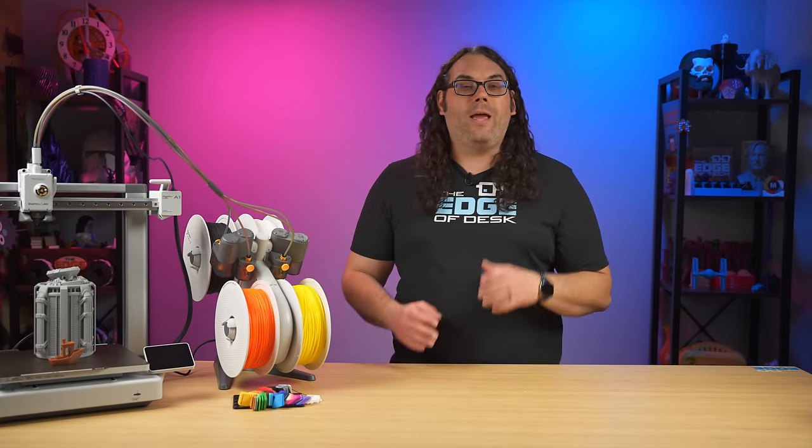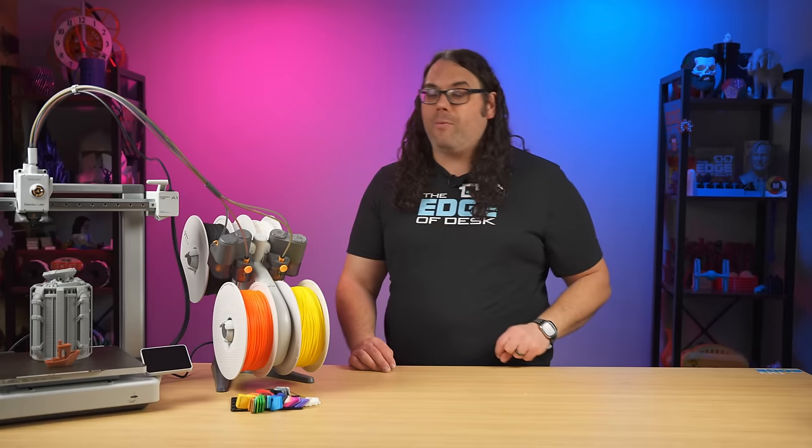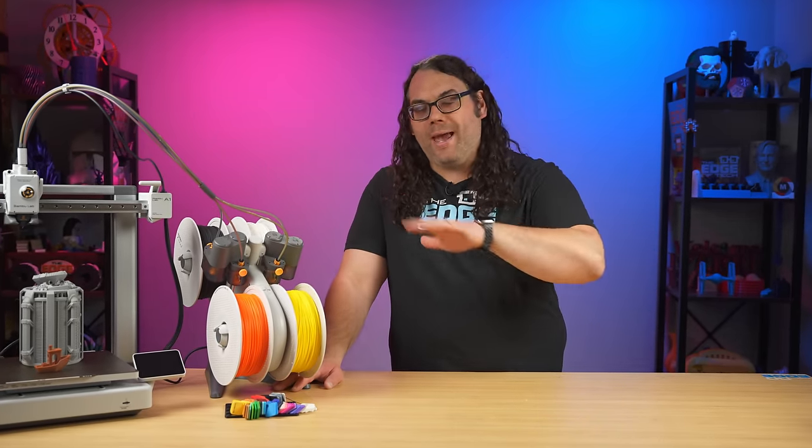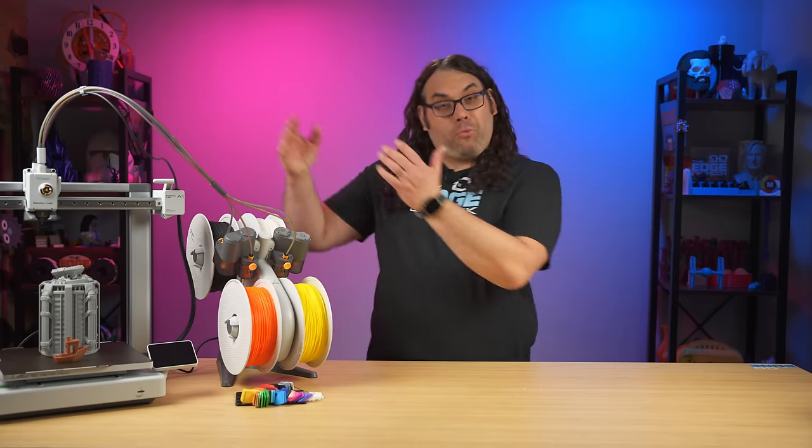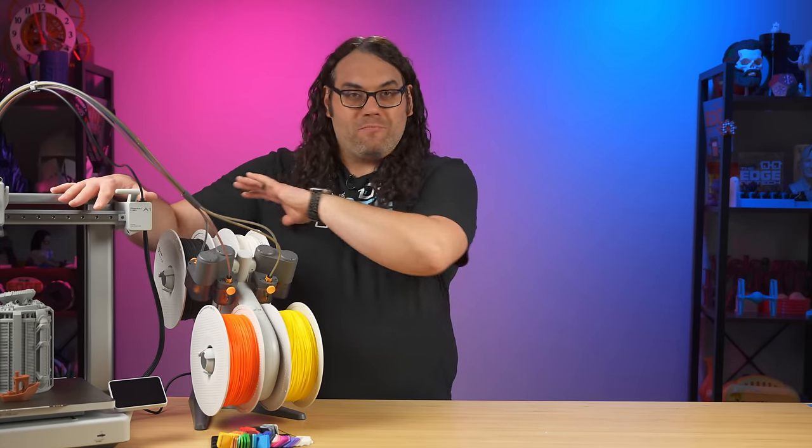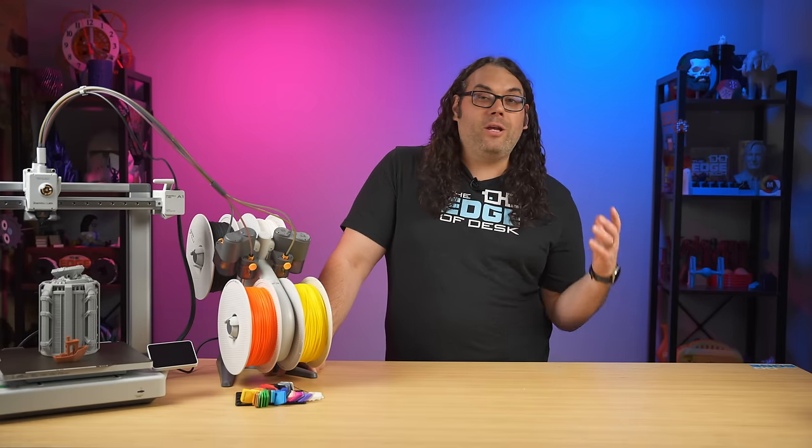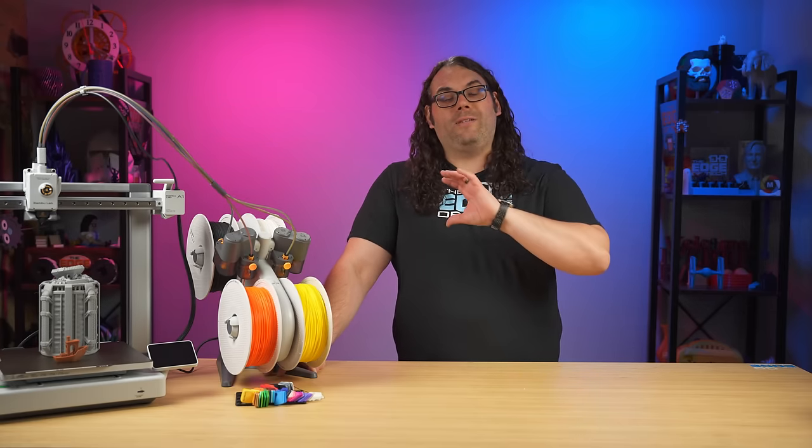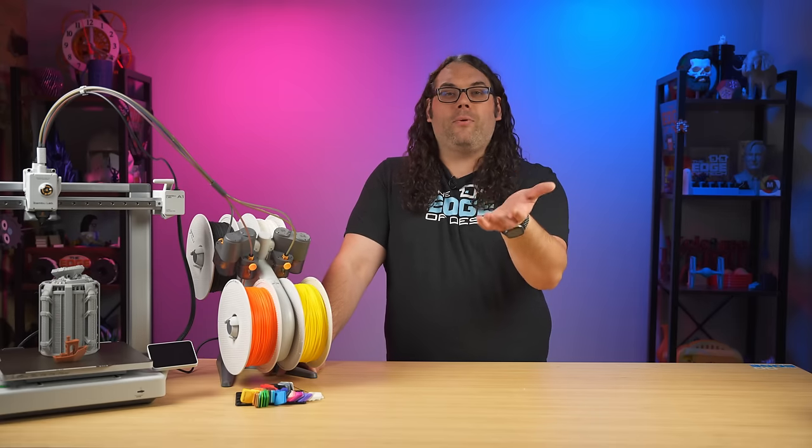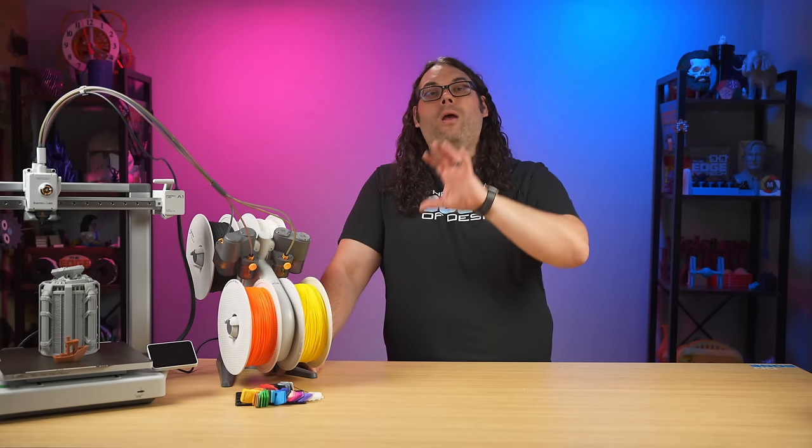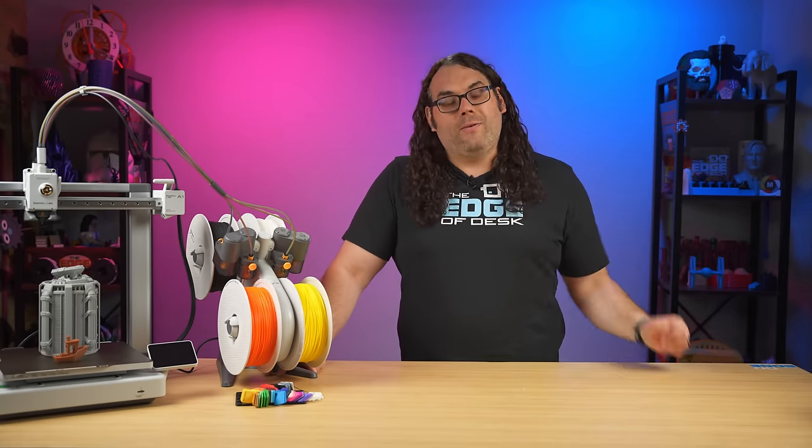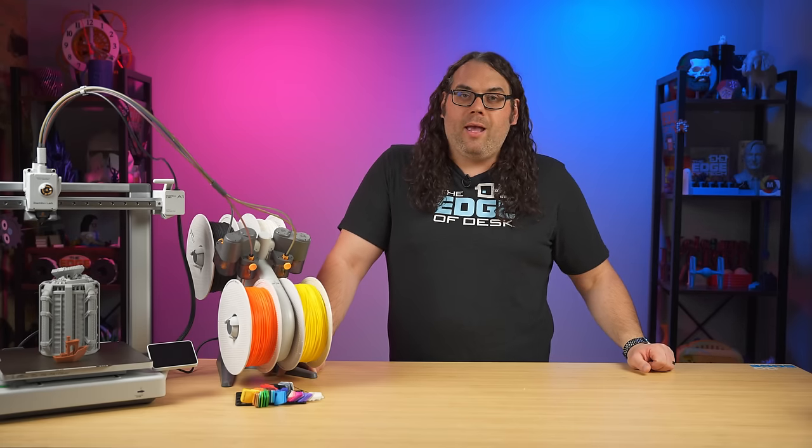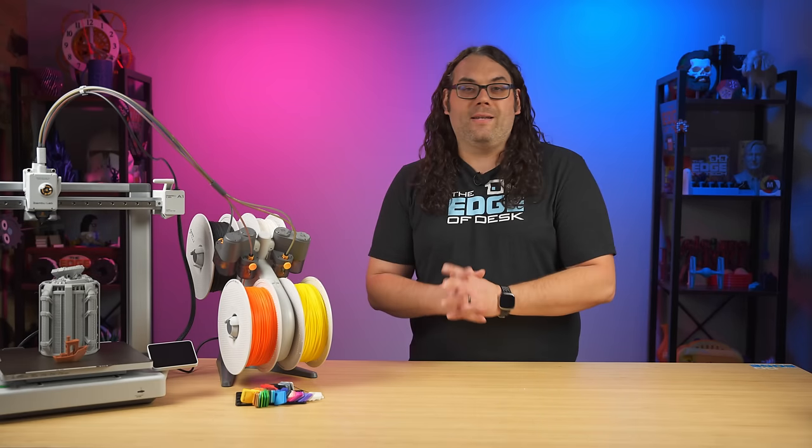For example, if you look at a pre-built MK4 right now on the Prusa website, it is $1,099 before shipping or tax. This is $399, that's apples to apples, just machine, no AMS. If you want to look at building your own MK4, which is awesome and many people have done it, that is $799 and you have to put it all together.